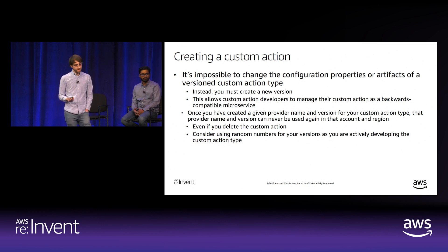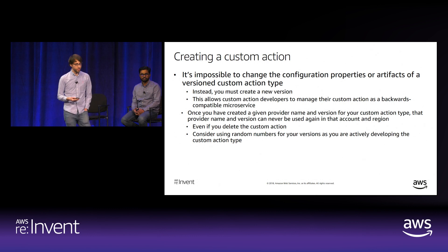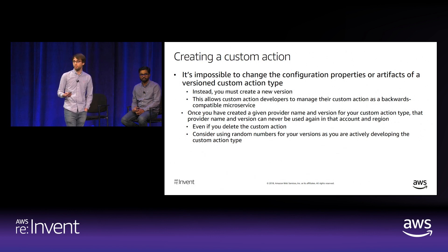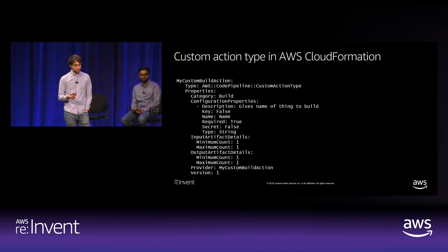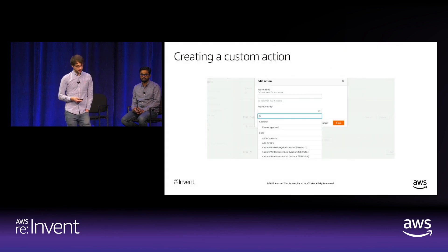If you often develop by tearing down and redeploying, you might prefer to use a version that's randomly generated or derived from your git commit SHA, so you don't accidentally consume a version number you wanted to keep for release like 1.0.0. Here's a sample CloudFormation template declaring a custom action type with configuration properties, allowed artifact counts, provider name, and version. Once created, it can be referenced in pipeline definitions and selected in the CodePipeline console.